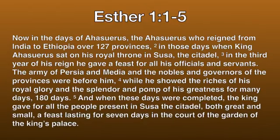Let's jump right into the text, starting in Esther chapter 1, verse 1: "Now in the days of Ahasuerus, the Ahasuerus who reigned from India to Ethiopia over 127 provinces, in those days when King Ahasuerus sat on his royal throne in Susa the citadel, in the third year of his reign, he gave a feast for all his officials and servants. The army of Persia and Media and the nobles and governors of the provinces were before him, while he showed the riches of his royal glory and the splendor and pomp of his greatness for many days — 180 days."